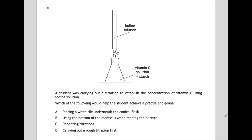And finally, question 20: we've got a picture here of a titration reaction with iodine and vitamin C and with some starch—should be probably quite a familiar reaction for you. And the student is carrying out a titration trying to find out how much vitamin C is in it using iodine solution. Which of the following would help them achieve a precise endpoint? So placing a white tile underneath, using the bottom of the meniscus, moving the burette, repeating titrations, or carrying out a rough titration. So if they were to place a white tile underneath the conical flask, then that means that they will see the color change more accurately, which means that their endpoint will be more precise because they will actually be able to see it happening. So the answer for this one is A.